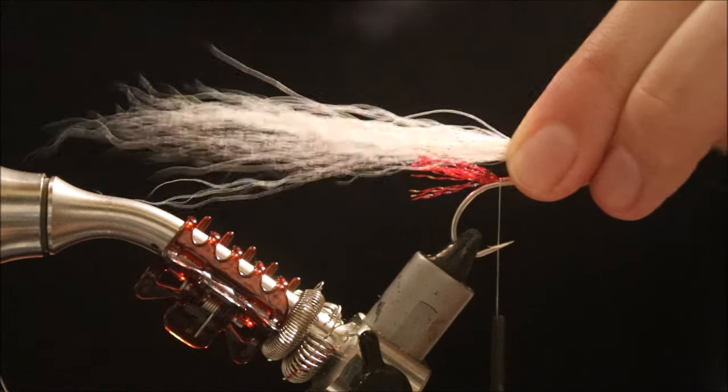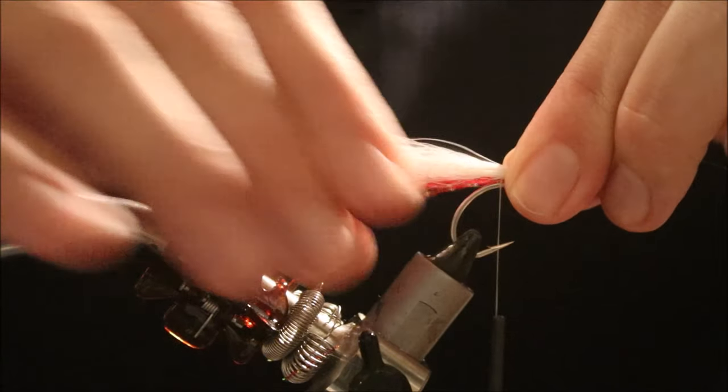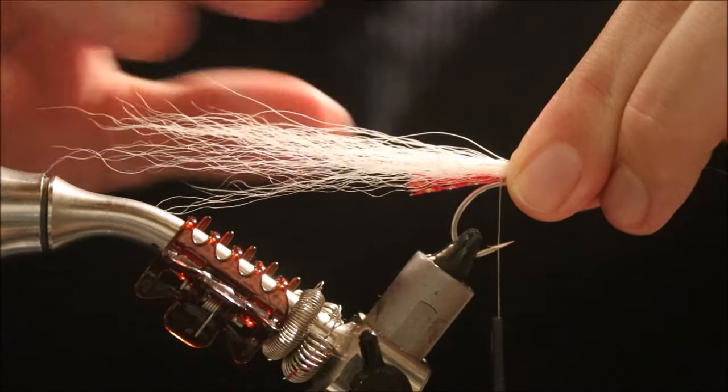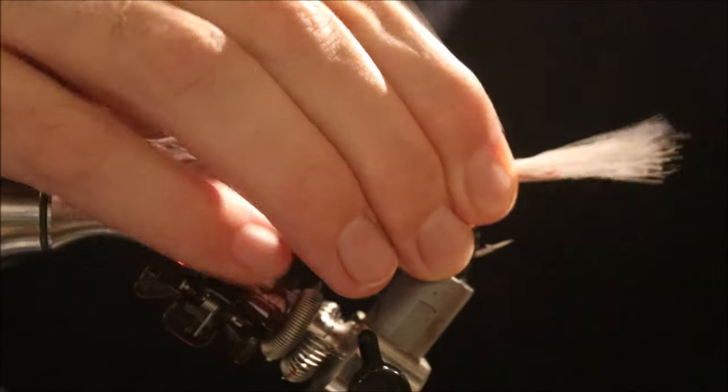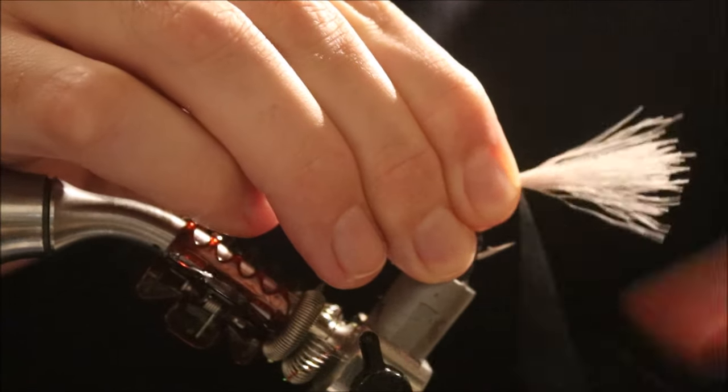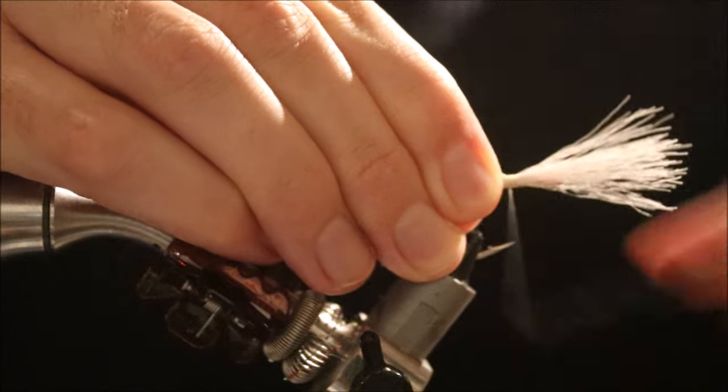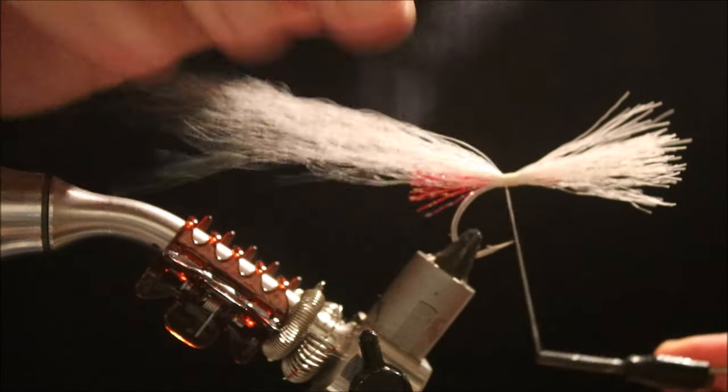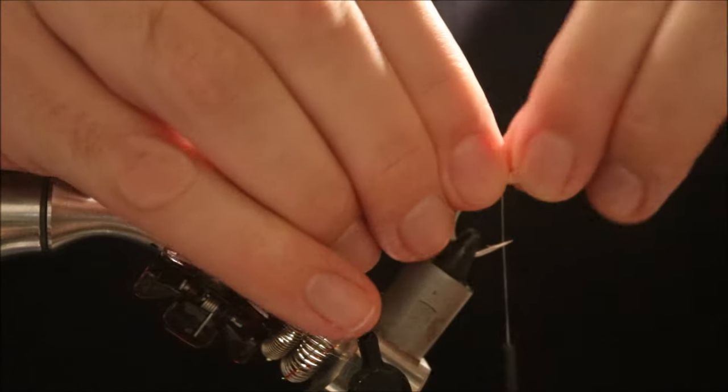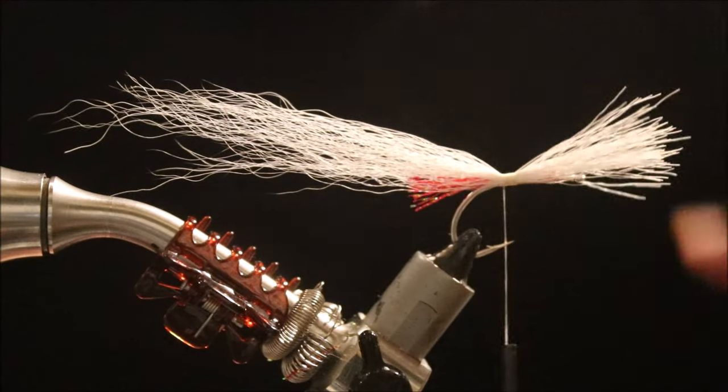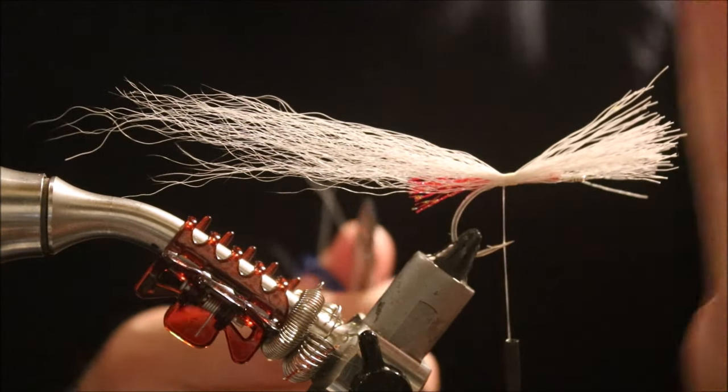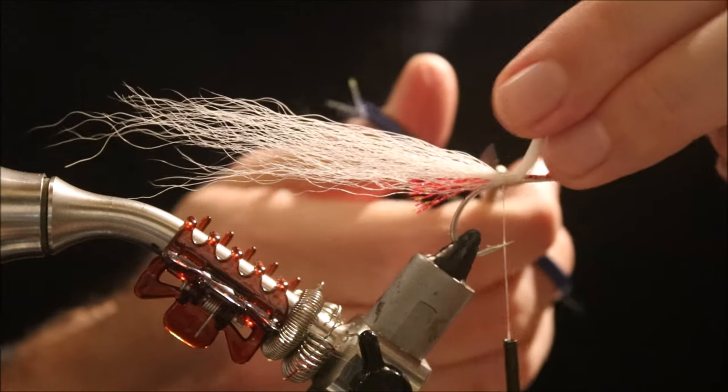Like two and a half shank lengths or so. I'll do my tail, just pinch and loop that in. Take two or three turns to lock it in, hold it nice and tight, and again make sure it stays on top of the hook. You don't want it rolling round. You want this to be vertically quite thin.